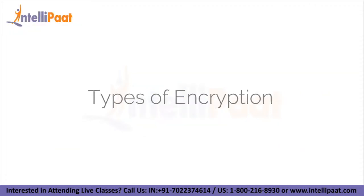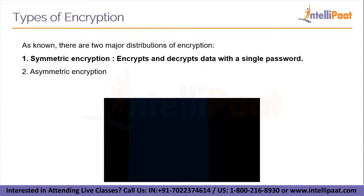Types of encryption: there are major distributions of encryption, so let us take a look at that. Encryption keys are a set of numbers that are used to encrypt and decrypt data. Algorithms are used to generate encryption keys, and each key is distinct and random. Asymmetric encryption and symmetric encryption are two types of encryption systems.